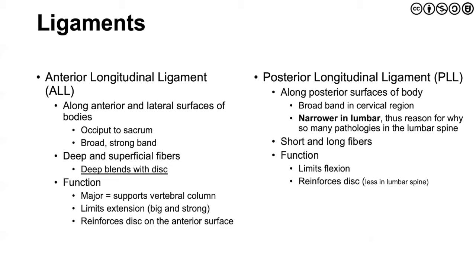Our primary ligaments are our anterior longitudinal ligament and the posterior longitudinal ligament. The ALL runs really from the occiput all the way to the sacrum. It's a very strong band, and it blends with the disc — those deeper fibers blend with the disc and serve to reinforce it, to limit extension, and provide support to the vertebral column. For the posterior longitudinal ligament, it lies along the posterior surface of the body. It's broad in the cervical region, though as we move more inferior, it becomes more narrow in the lumbar — one of the reasons why clinicians believe there may be an increased incidence of pathology in the lumbar spine.